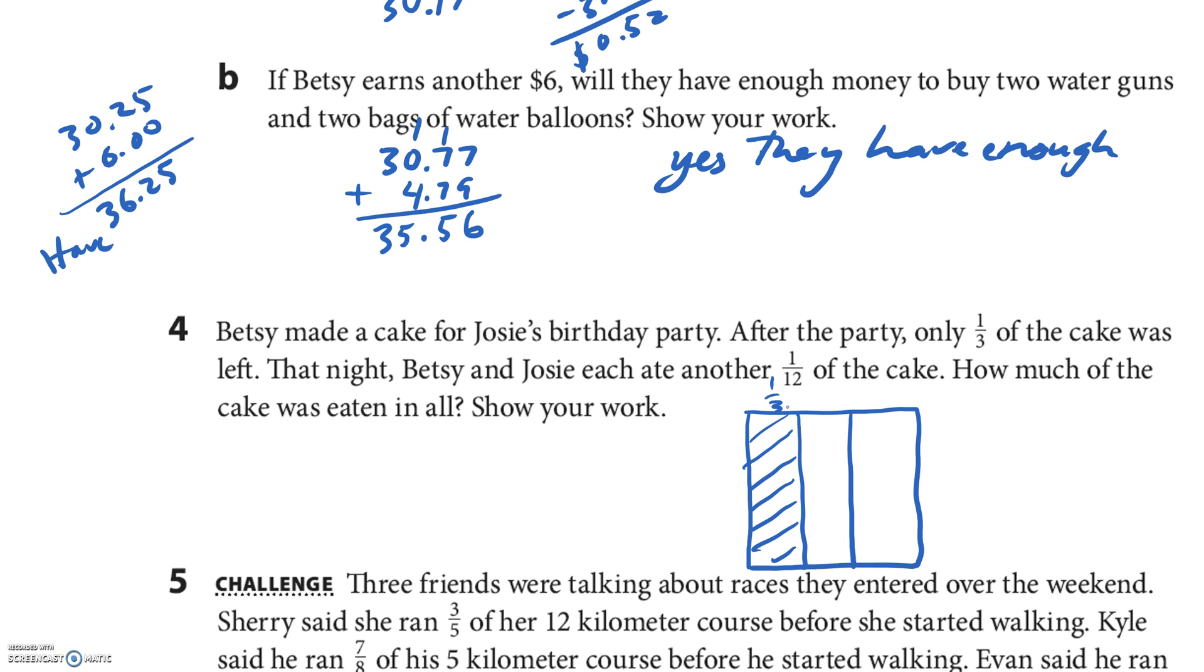So, um, this one's kind of weird. So there's 1/3 of the cake—1/3 of the cake, right? Left. That's my 1/3. That night, Betsy and Josie each ate another 1/12 of the cake—not 1/12 of 1/3, which is really hard to make a problem of. You can subtract 1/12 from it. I guess we could do that, right? We could subtract 1/12 and subtract 1/12. I'm gonna break it in 12ths. I know that if I break each of these—if I break it into 4ths, that's 12.